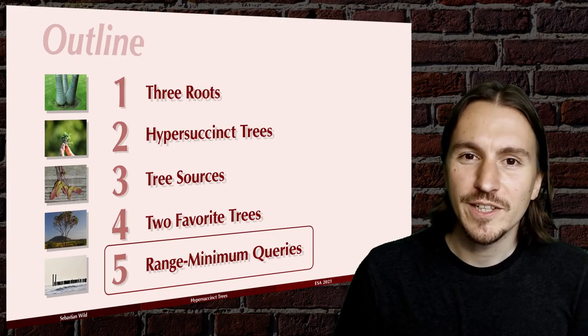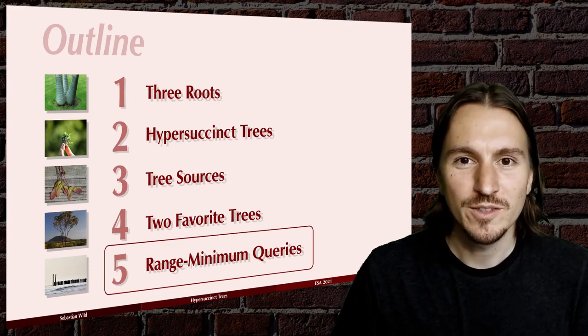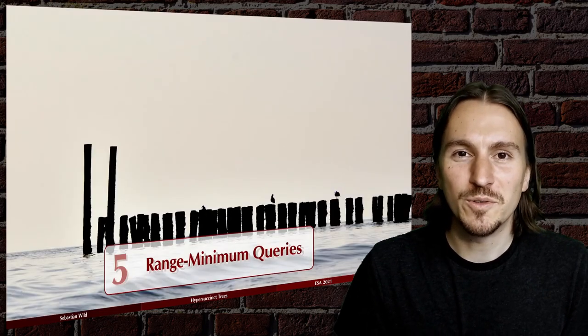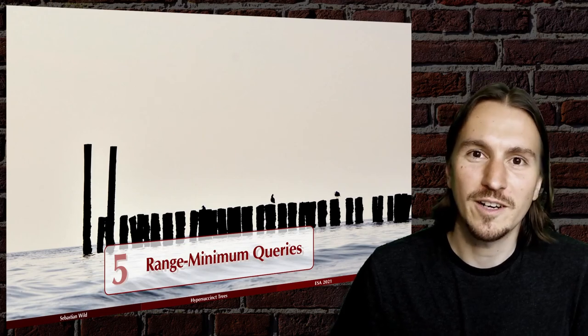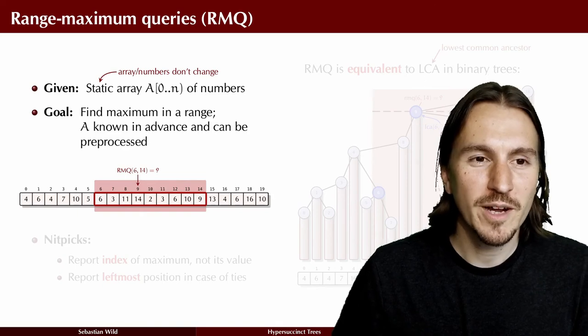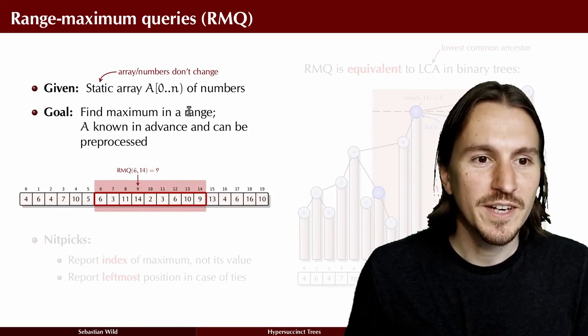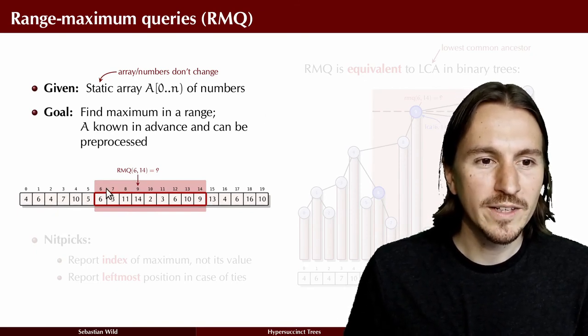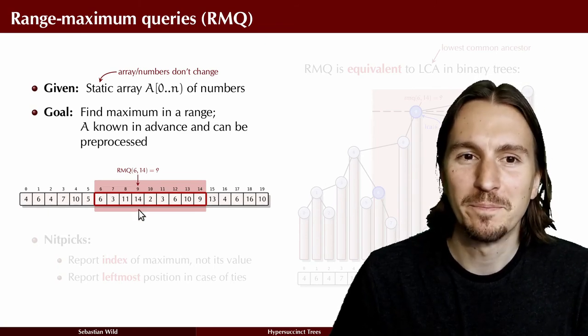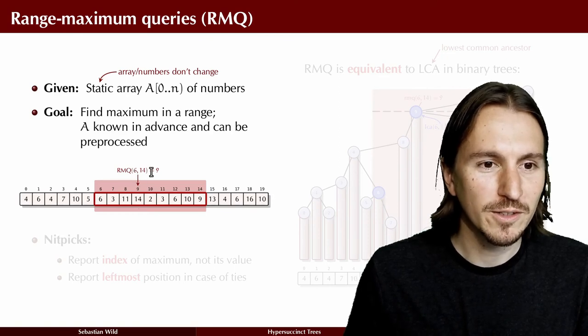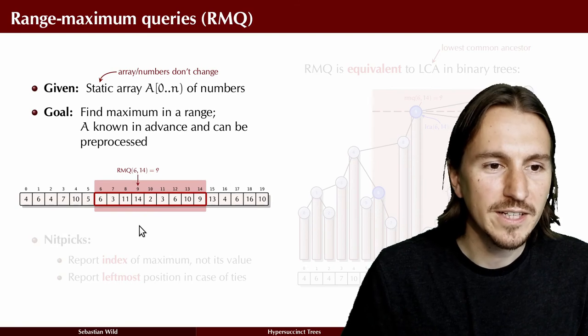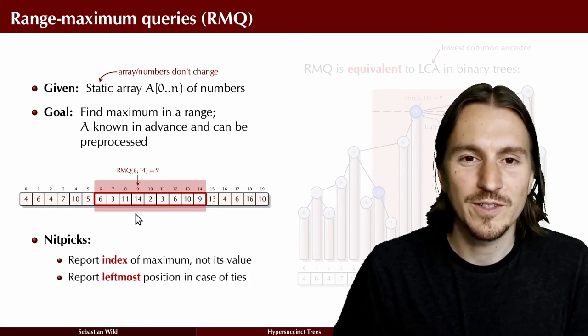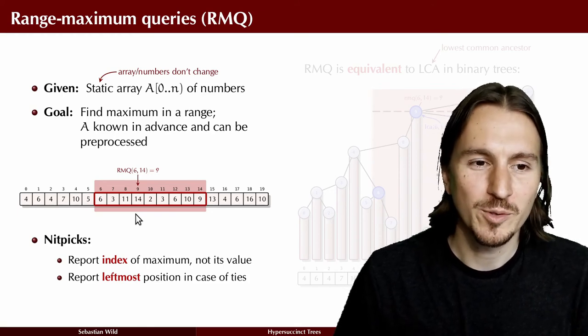Hyper-succinct trees are a tree data structure that automatically adapt in their space usage to redundancy found in a given tree. In the last part of this talk, I want to apply this to get new data structure results for the classic RMQ problem. In the range maximum query problem, we're given a static array of numbers at preprocessing time, and then at query time, we would like to find where in a given range is the largest element in the array. So in this example, the query would be from six to 14. And the answer would be nine, because that's the index where we have the maximum. We don't care about the value. So that turns the problem into a comparison based problem. And in case of ties, we report the leftmost such position.